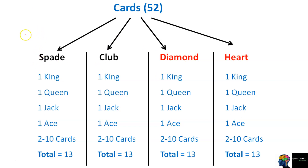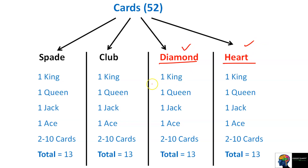But if I change the question and say: find the probability of getting a red color king. Now, red color means Diamond and Heart. So we need the king of heart or the king of diamond. That gives us 2 scenarios — a diamond king and a heart king. So the probability will be 2 by 52.